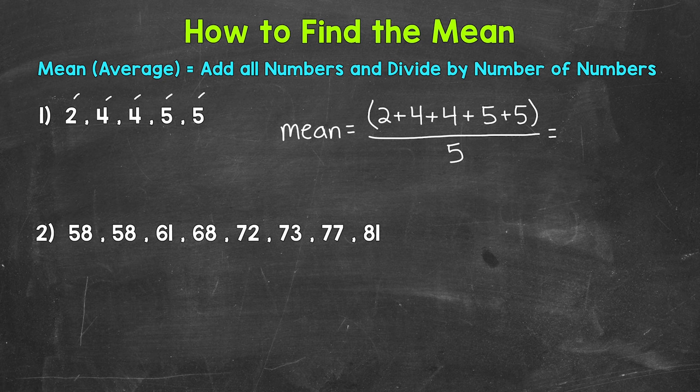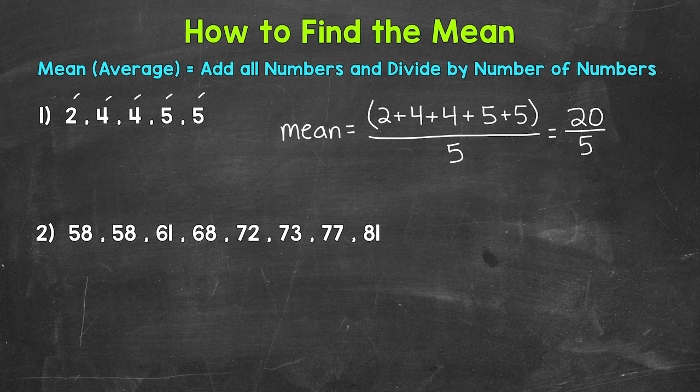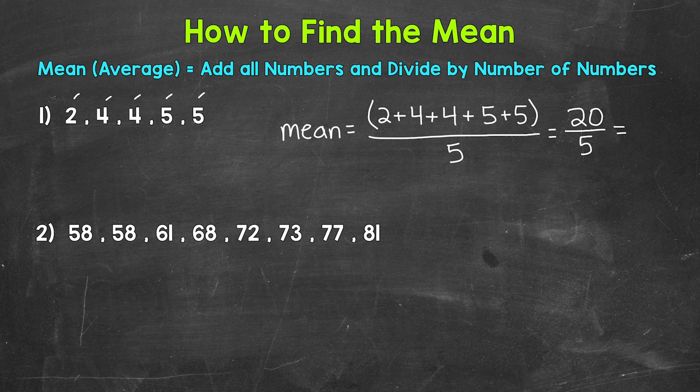Let's add first, so 2 plus 4 is 6, plus 4 is 10, plus 5 is 15, plus 5 is 20. So the sum of the numbers is 20, and then we divide by 5. So 20 divided by 5 is going to give us our mean. 20 divided by 5 is 4.